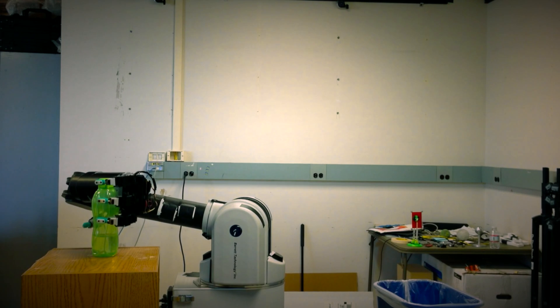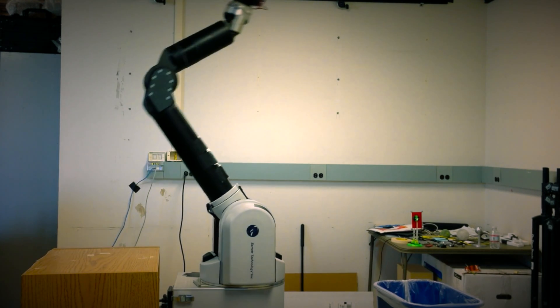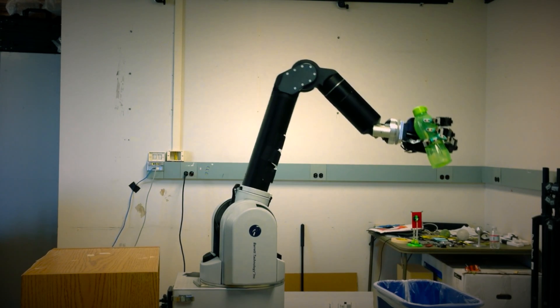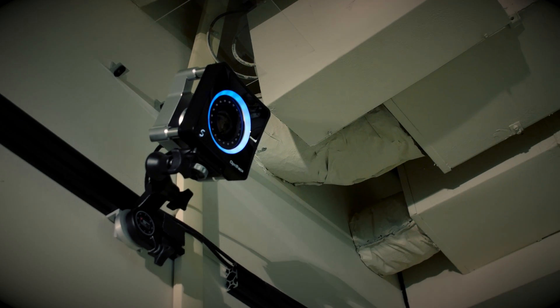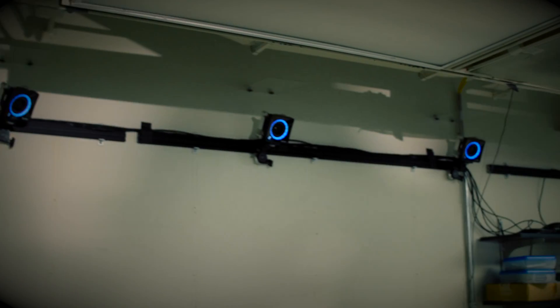So in our lab, we've developed a new robot manipulation system based on a seven degree of freedom robot arm, our robot hand with the tactile sensors, and the high-speed surround vision system, collecting images 360 times a second.